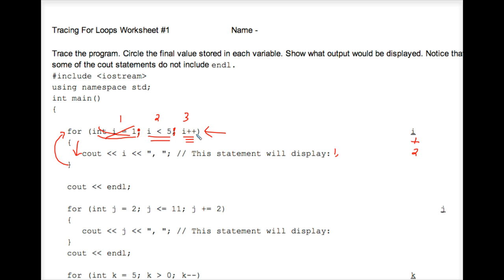Then the computer checks the control expression. Is i less than 5? Yes, it still is, so we go through the loop. We do not ever do the initializing expression ever again, it was a one-time only thing. Now we're in the loop and we cout i. The value stored in i is now 2, so a 2 prints out, along with a comma and a blank space.